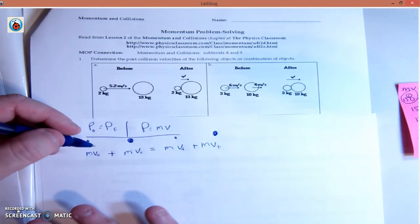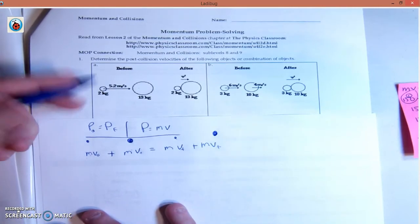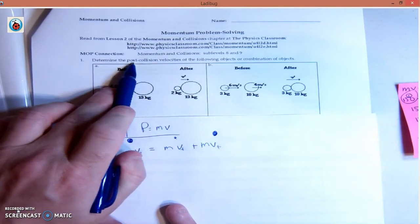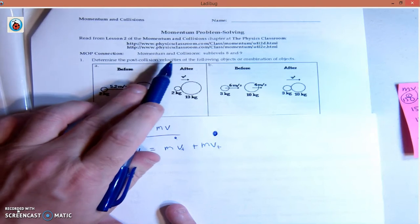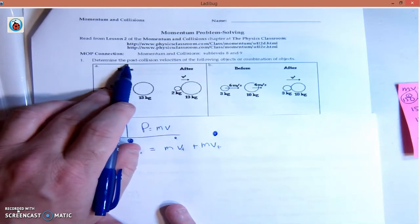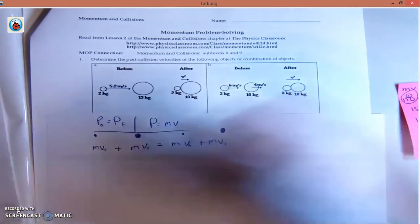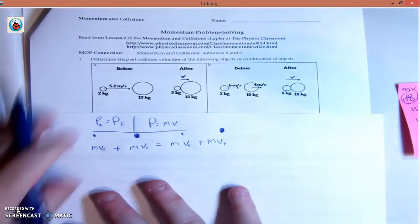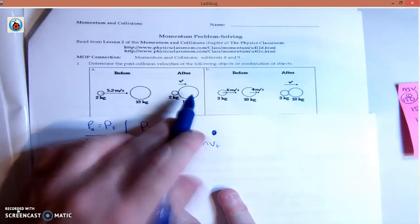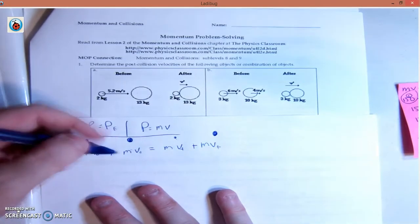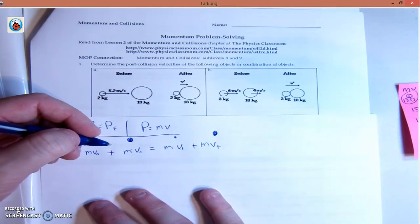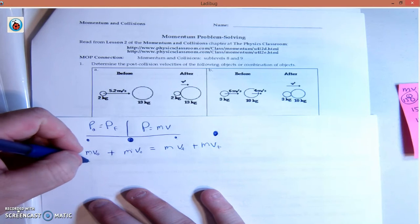Let's plug stuff in. What are we trying to find? We are trying to find post-collision velocity. Post means after, collision means smash, so the speed after they smash into each other. We're going to go through our normal steps. This is actually going to be really fast.